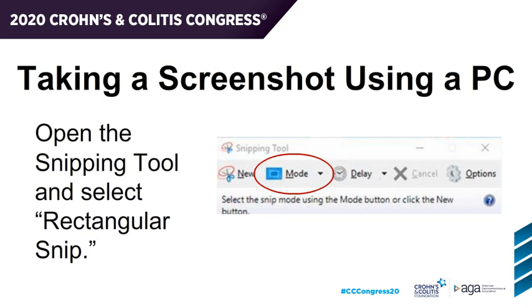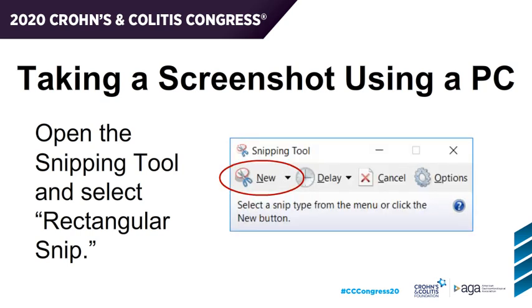After the Snipping Tool is open, you'll want to set it to take a rectangular snip. Click the Mode tab and select Rectangular Snip from the dropdown. If you're using an older version of the Snipping Tool, like the image displayed here, you should click the New tab and use the dropdown to select a rectangular snip.